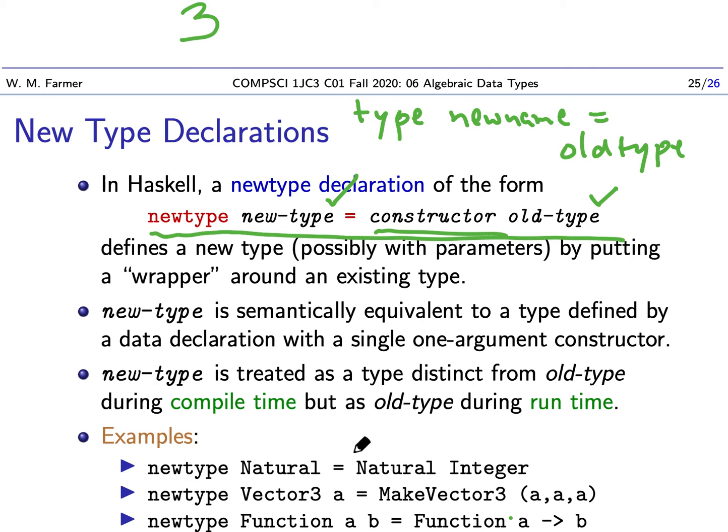So the interesting thing about this is that these introduce new types. But these types are only used for type checking. They're only used during the compile time. So at the compile time, they're like new types. But once compilation is done, once we've done all the type checking, then they're used as the old type during run time.